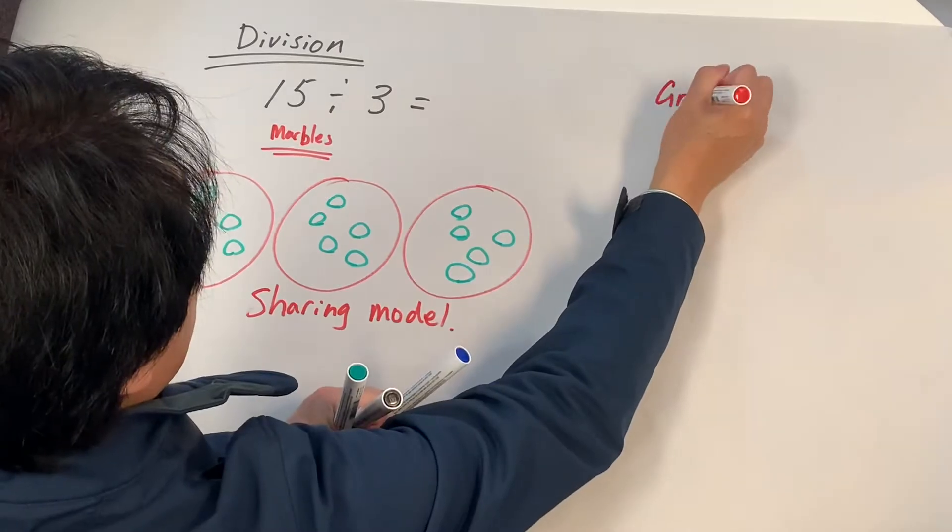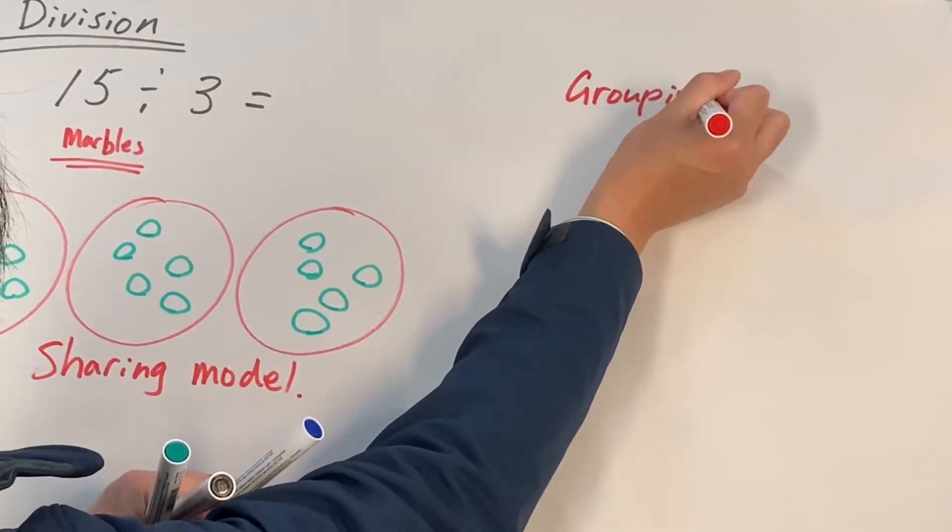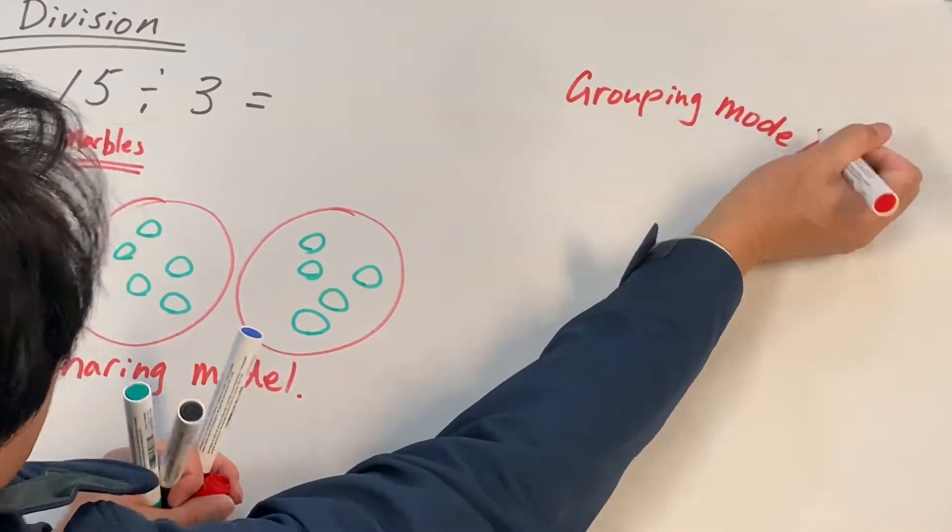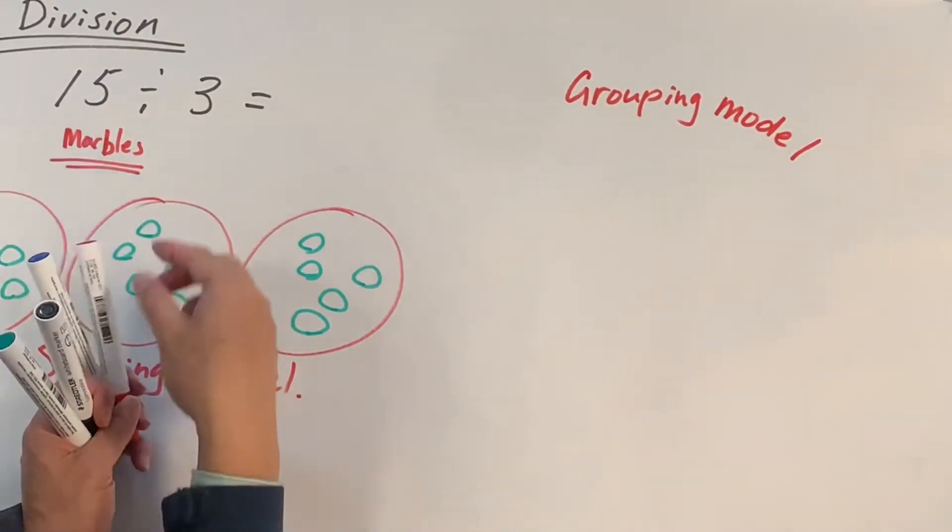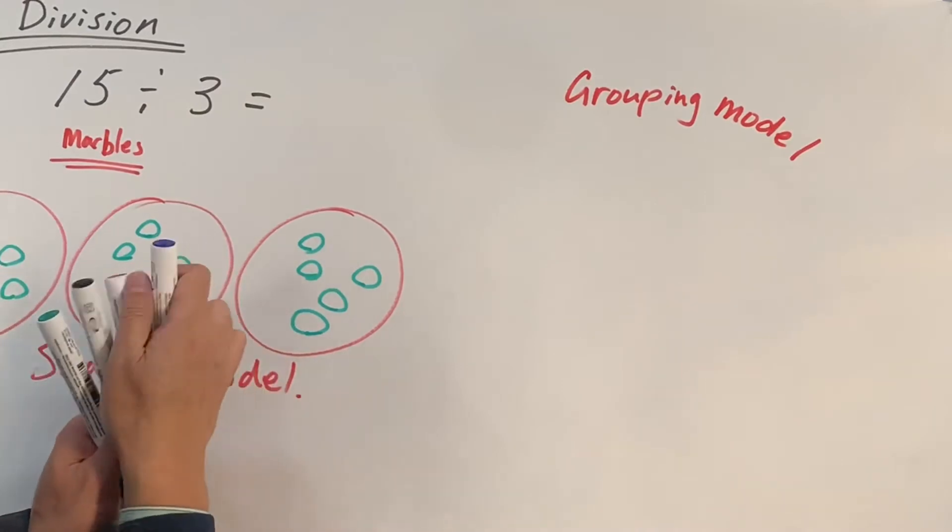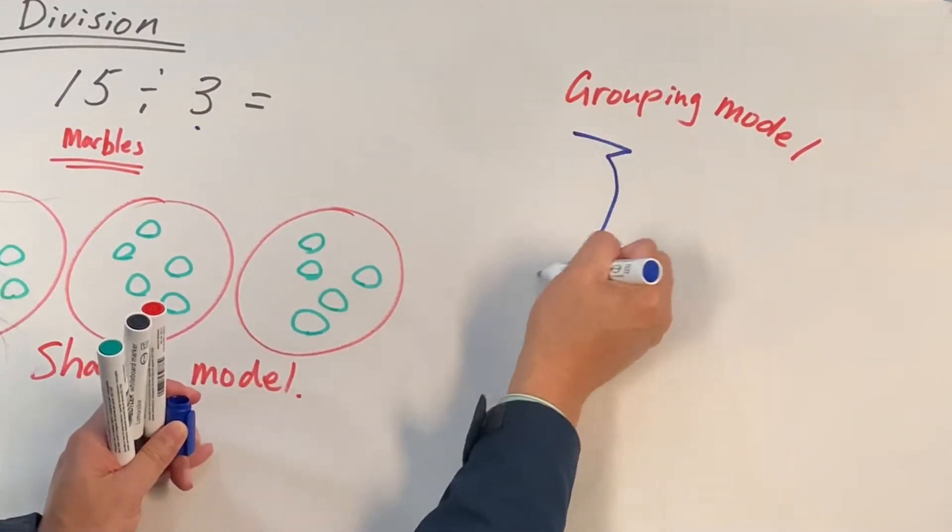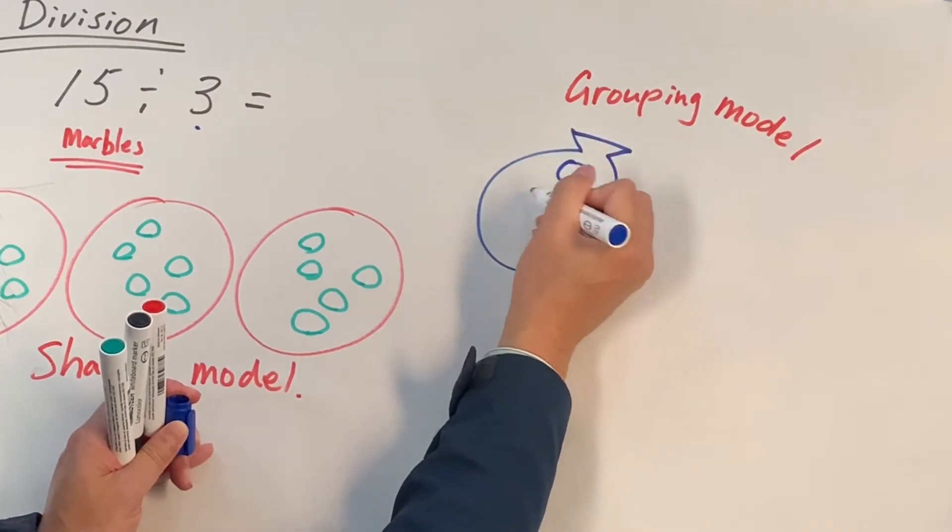So this is called grouping model. We have 15 marbles and in each bag there are three marbles. So let's see. Three marbles in each bag.